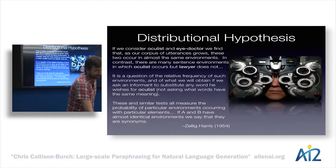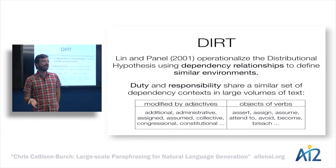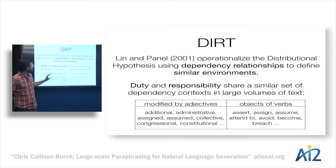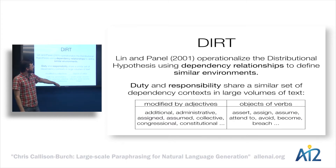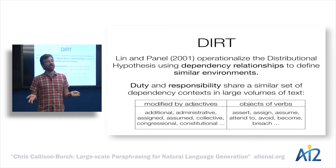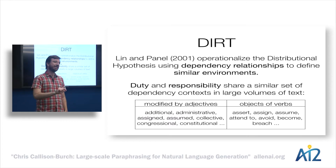There was a really awesome NLP effort that operationalized this distributional hypothesis called the DIRT system — Discovering Inference Rules from Text — by Patrick Pantel and Dekang Lin. They defined context using dependency relationships, saying that 'duty' and 'responsibility' are paraphrases of each other because they're both modified by the same adjectives like 'additional,' 'administrative,' 'assumed,' and they're both the object of the same verbs. Using that notion, you can define a vector space model and define similar environments as the thing that gets you paraphrases, even without monolingual parallel text.